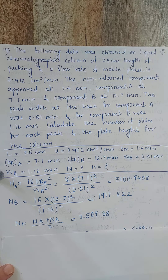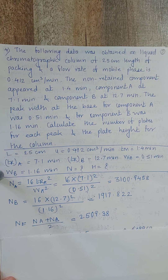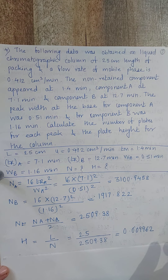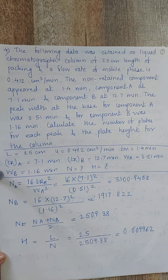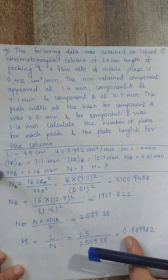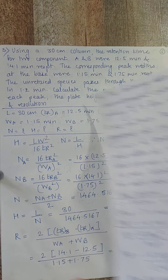Average N = (NA + NB) / 2 = (3100.9458 + 1917.822) / 2 = 2509.38. H = L / N = 25 / 2509.38 = 0.009962.